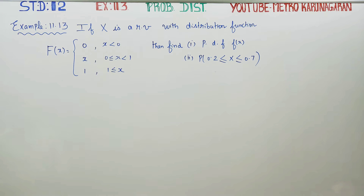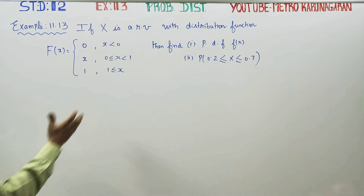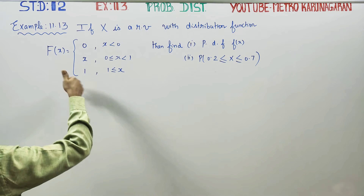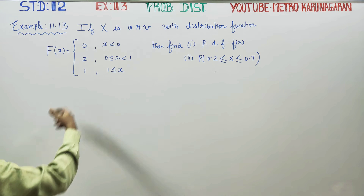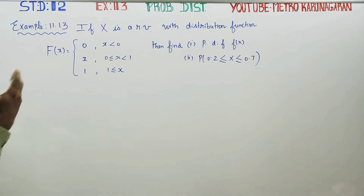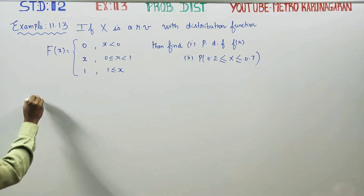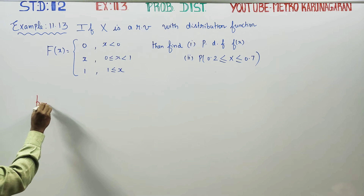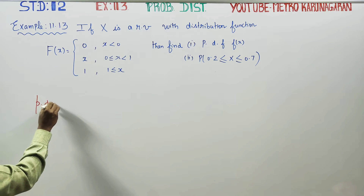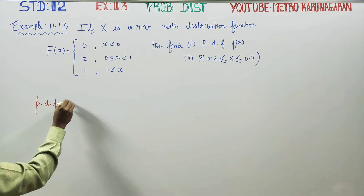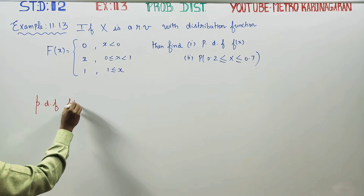If x is a random variable with a distribution function — this is a cumulative distribution function — find the probability density function. The probability density function is small f of x.